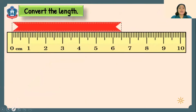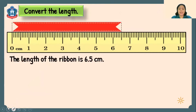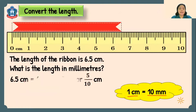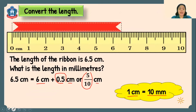Now let's try to convert lengths. The length of this red ribbon is 6.5 centimeters. What is the length in millimeters? Remember that 1 centimeter is equal to 10 millimeters. So 6.5 centimeters equals 6 centimeters plus 0.5 centimeters. In fraction form, that is 5 tenths. And 5 tenths of a centimeter is equal to 5 millimeters. So 60 plus 5 gives us 65 millimeters.